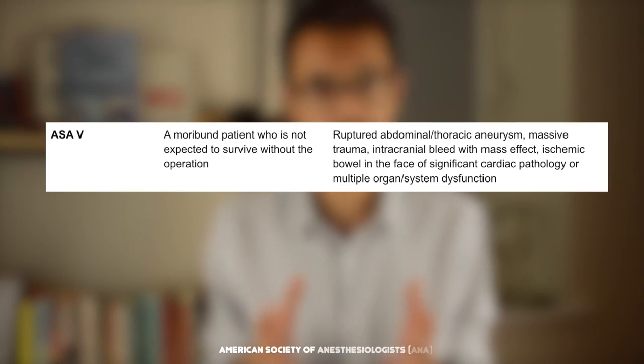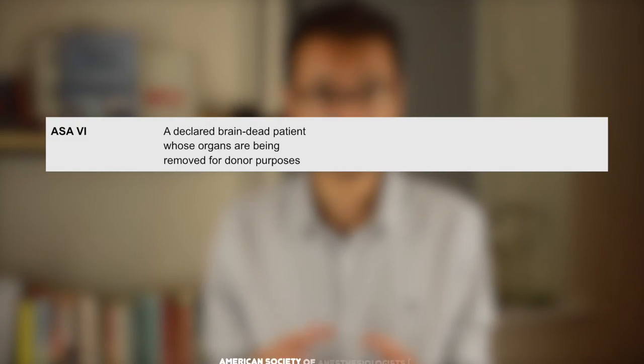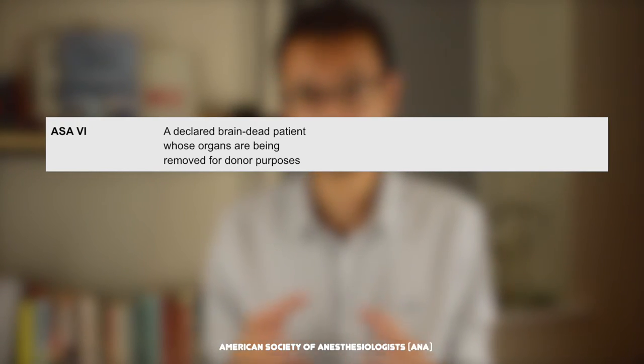ASA 5 describes a moribund patient who will not survive without the operation or intervention. This includes patients who have ruptured aneurysms or have potentially been in massive trauma. And finally, ASA 6 describes a patient who has been declared brain dead but whose organs are being removed for donor purposes.